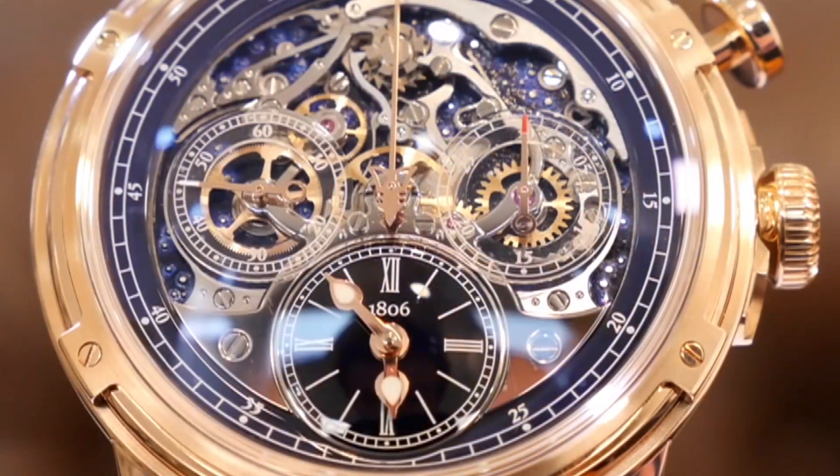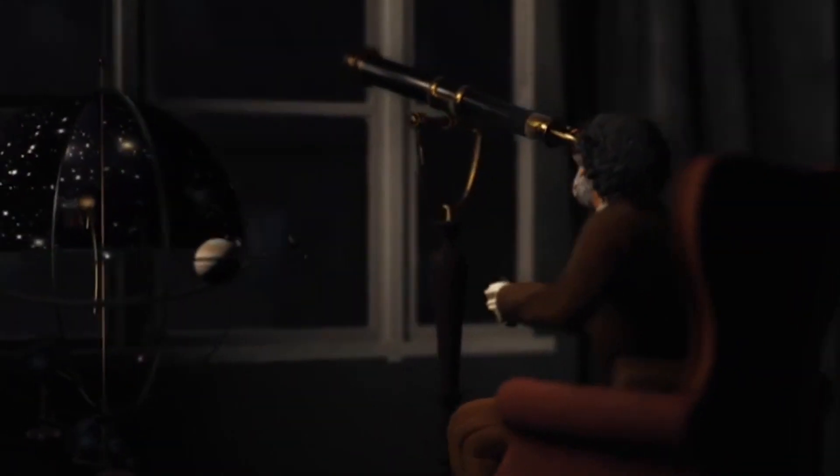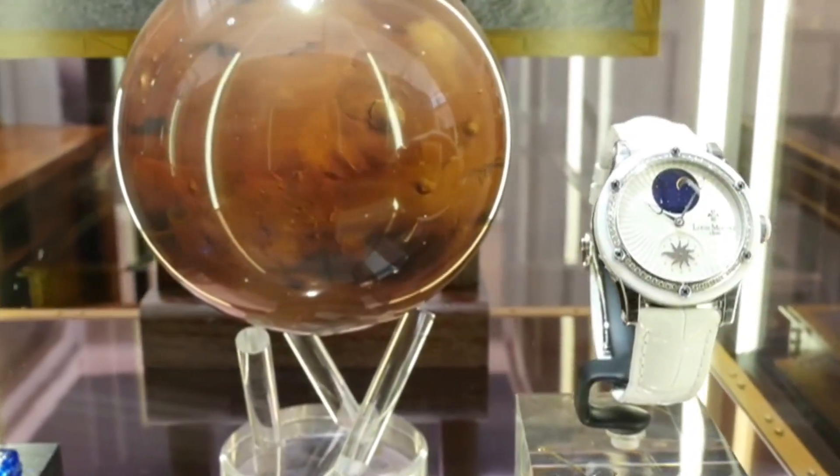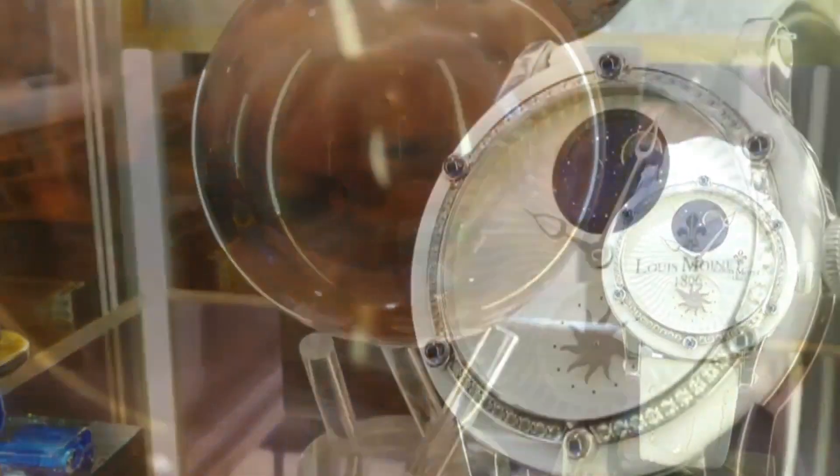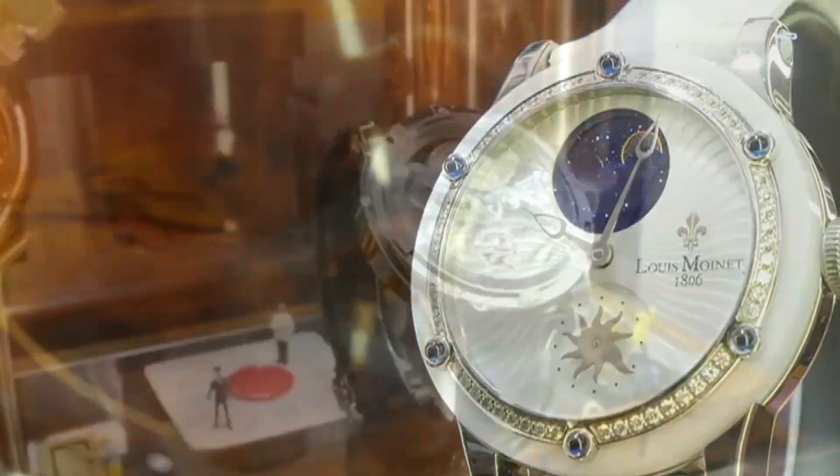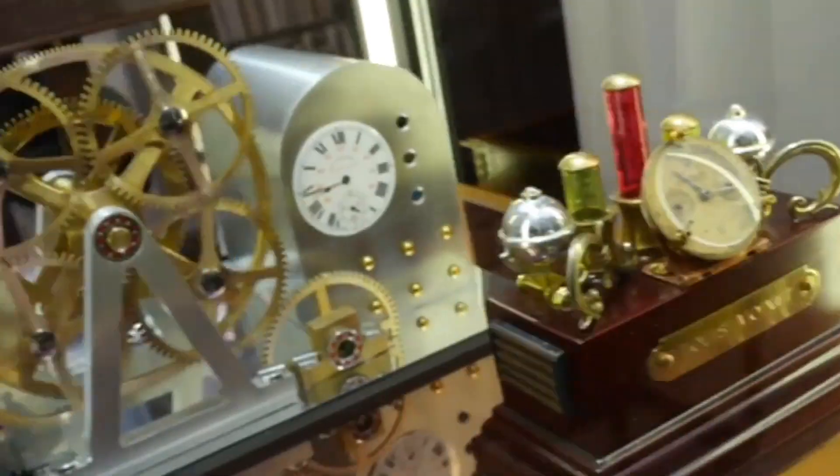Meteorite shards that were actually collected from the moon are used in the construction of the Tourbillon moon. The dial of the Tourbillon asteroid is made from an asteroid that, according to scientific speculation, formed in close proximity to the sun.